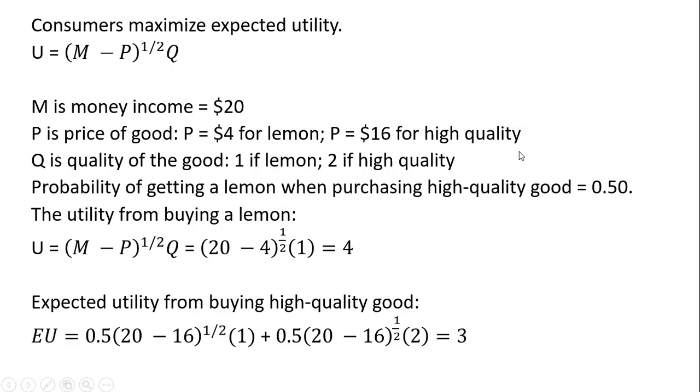So if you're an expected utility maximizer, you get a higher level of utility from buying a lemon than taking a chance and buying the high quality good. So in this case, the high quality market collapses and consumers only buy lemons. Okay, that's it. I hope you found this video helpful.